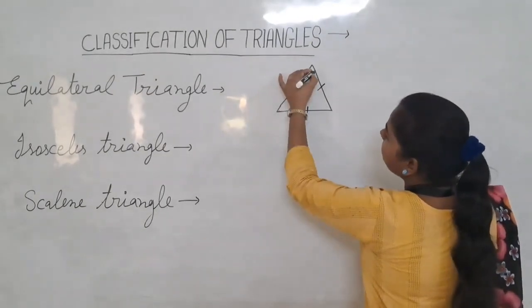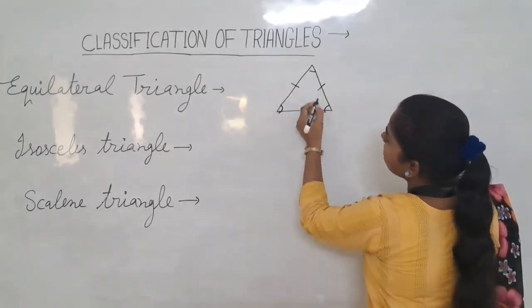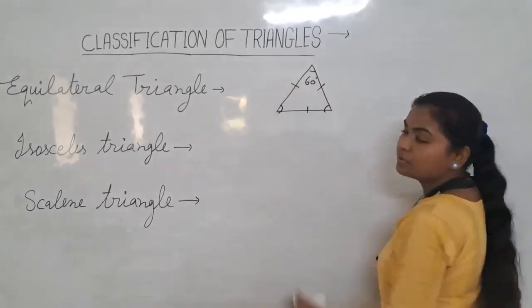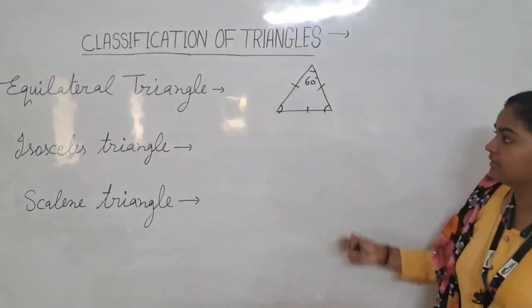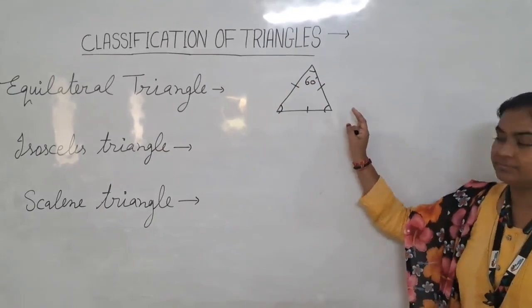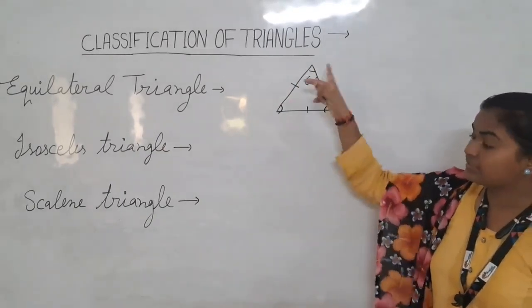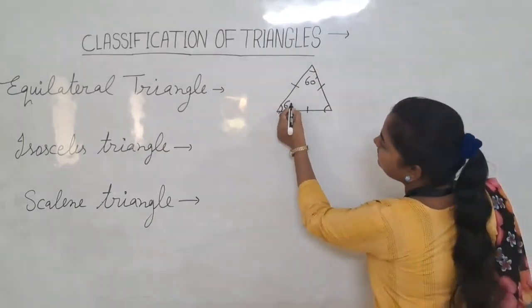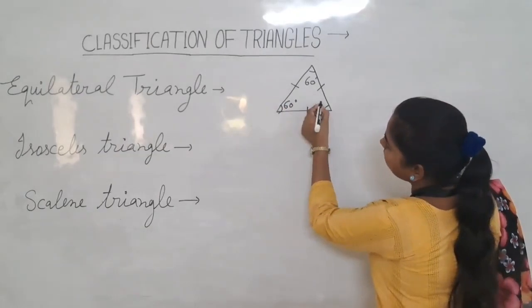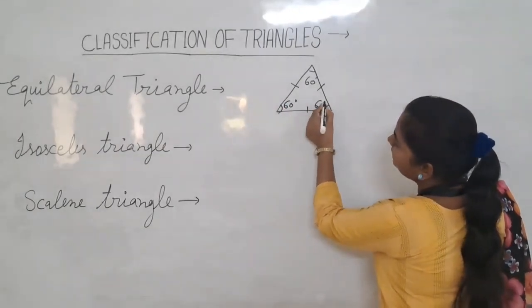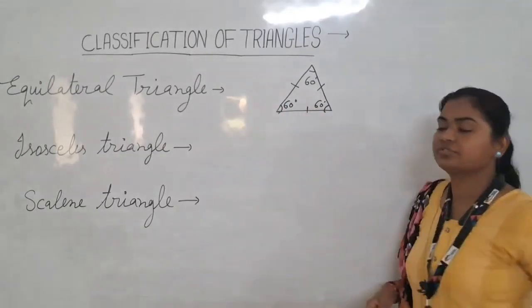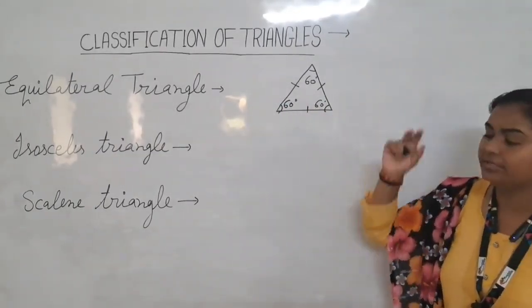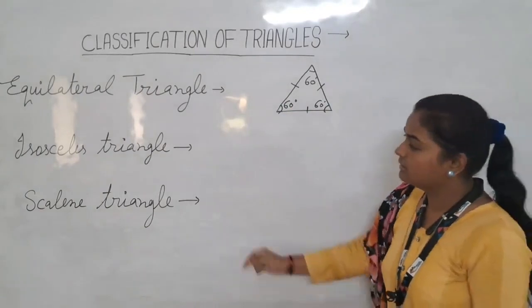The interior angle is also 60 degrees. By the angle property, all angles are equal in this triangle. So the interior angle is 60 degrees. It is an equilateral triangle.